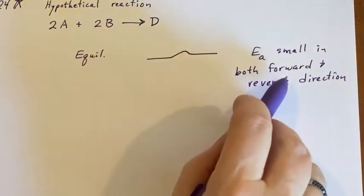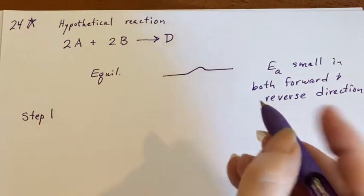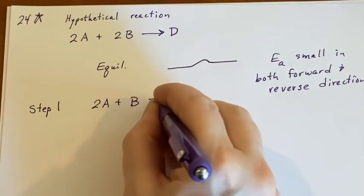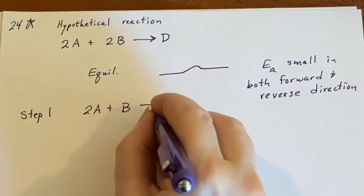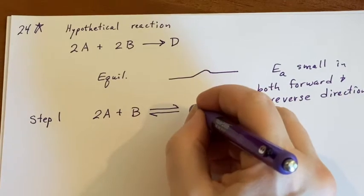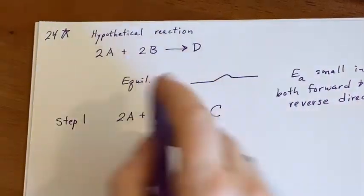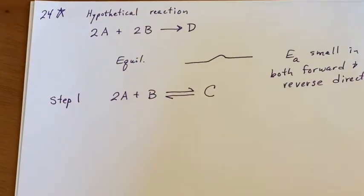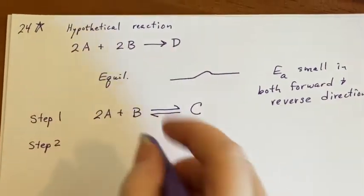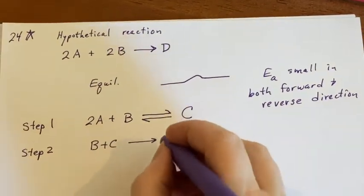In the proposed mechanism, step one is that two A's and a B combine, and it's an equilibrium because of the small activation energy to form C. C isn't even in the overall reaction—it must be an intermediate. Then in step two, we haven't used the last B, so B and C combine to form D.